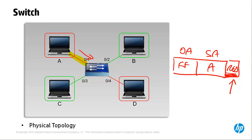Depending on the switch architecture, what typically happens is that internally in the switch, the frame is copied to all ports. If the backplane is a bus, the frame will be copied to each individual port. This would happen whether it was a broadcast, multicast, or unicast. In the case of a broadcast frame, the frame needs to go to every port on the switch and is copied to every port without being flushed.